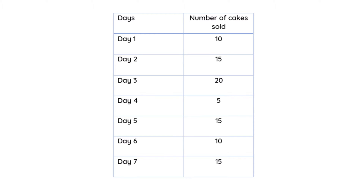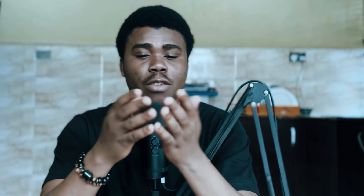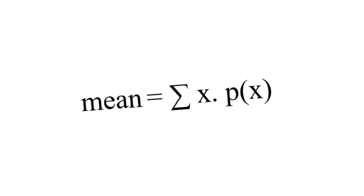Here is an example of a random variable defined by a discrete probability distribution — a dataset from someone who sells cakes. We have the days and the number of cakes sold each day; the number of cakes is the random variable, and we can get the probability of selling a particular number of cakes each day. To get the expected value, the formula is: E(X) = Σ x · P(x), the sum of each random variable multiplied by its corresponding probability.